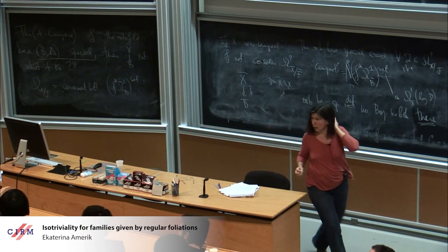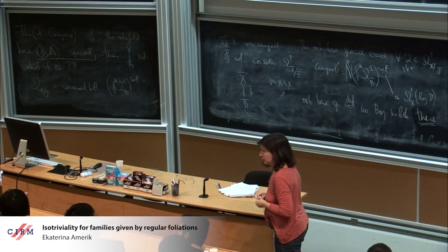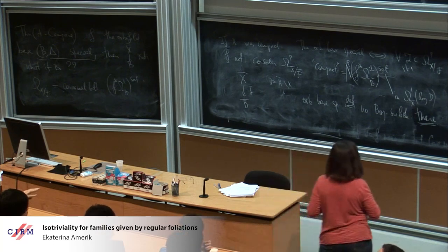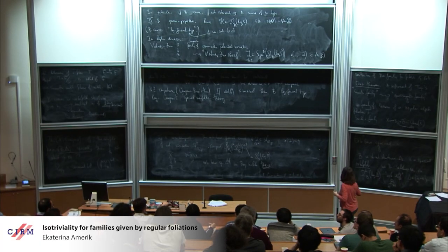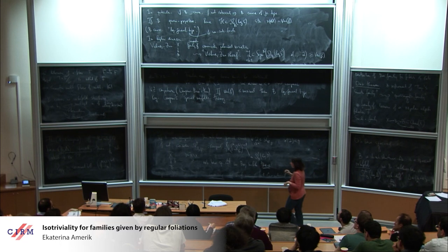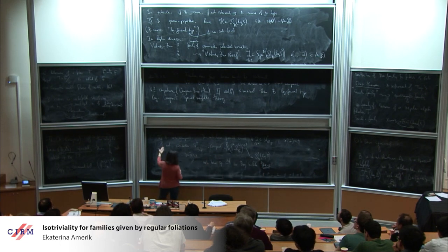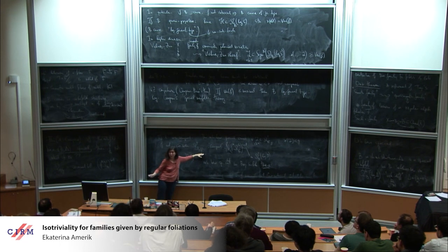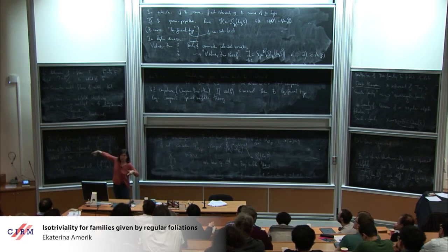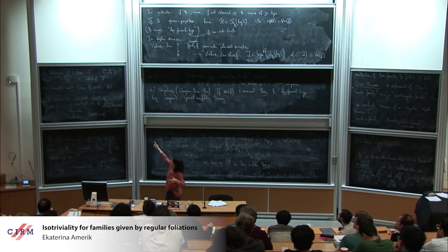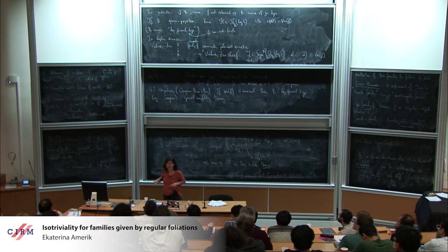There is a question from the audience: you have two definitions — one depends on delta. The answer is that delta is hidden in the foliation: the foliation has some non-trivial holonomy, and this gives you delta. The m_i's are the orders of holonomy.